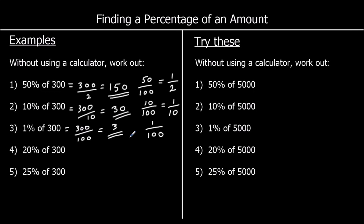Question 4 asks us for 20%. We've already worked out what 10% is, so to find 20% we can just double 10%. 10% is 30, so double that gives us 20%. And question 5, 25% of 300: to find 25%, we can half 50%. So that's 150 halved, divided by 2, which is 75.